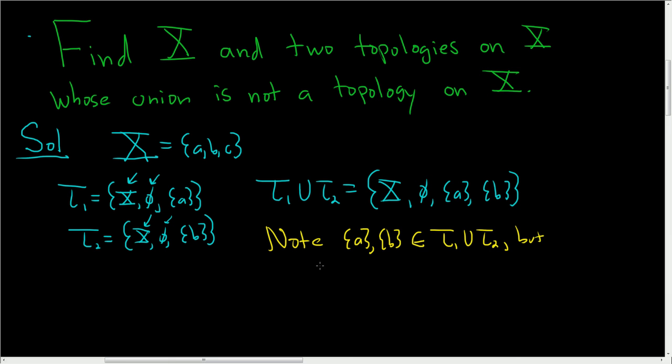But the union is not there. If you take the union of these two singletons, you get the set containing a and b. And this is not in the union. So we found two open sets in tau 1 union tau 2, whose union is not in tau 1 union tau 2.